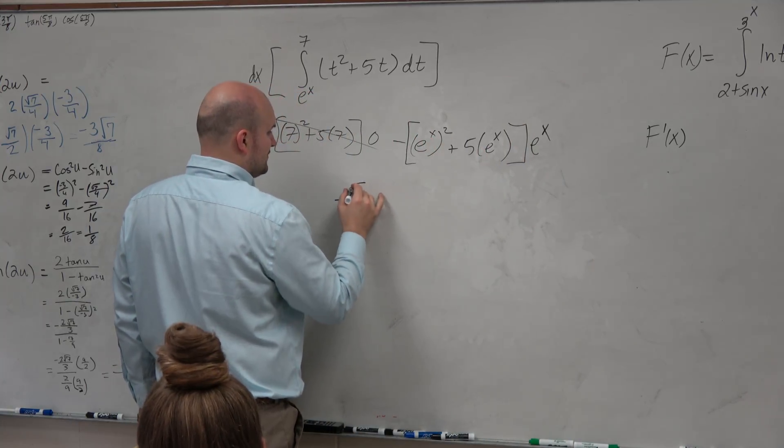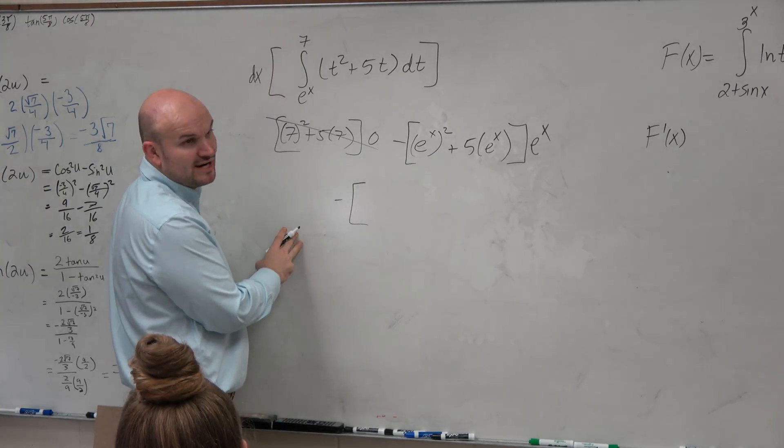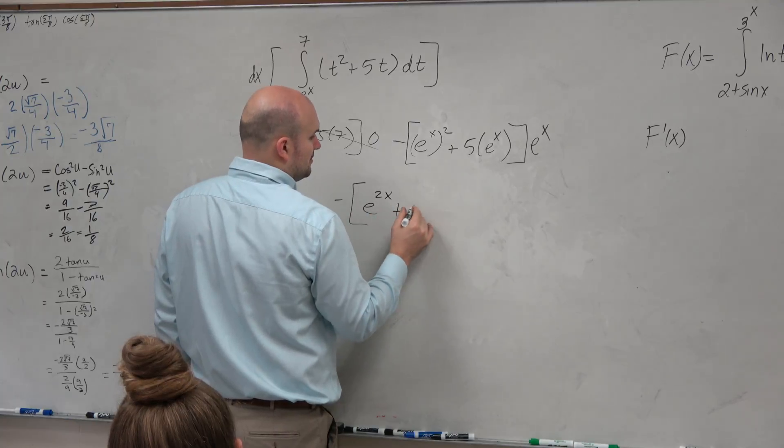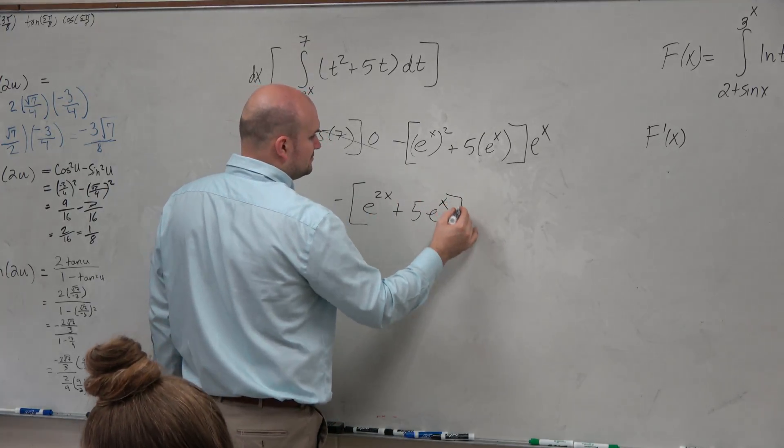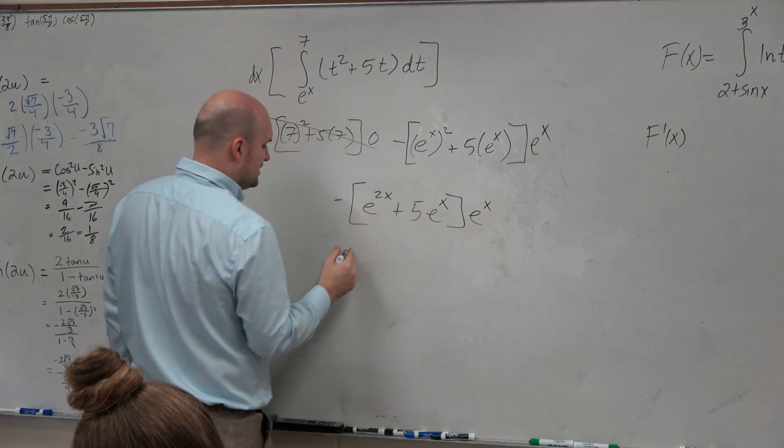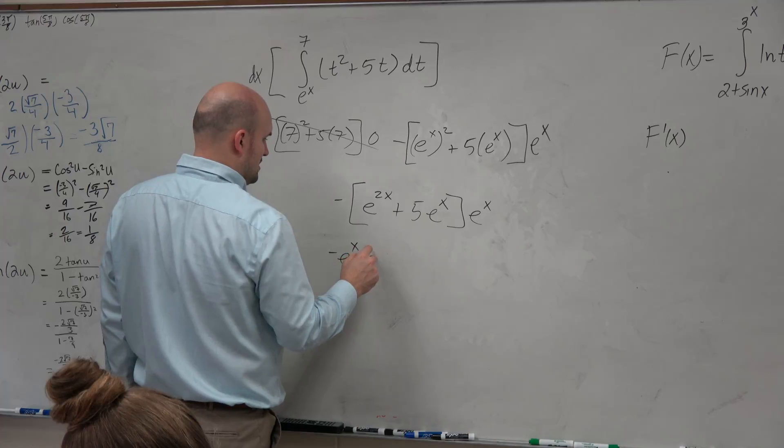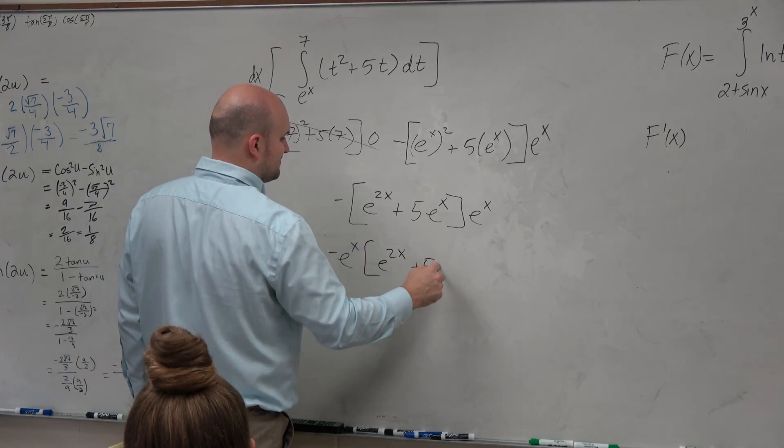Now let's go ahead and simplify this a little bit further. The power rule of exponents says e to the x raised to the second would just be e to the 2x plus 5 e to the x. And then times e to the x, I could bring that e to the x out front, and you could leave it as e to the 2x plus 5 times e to the x.